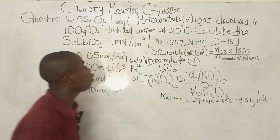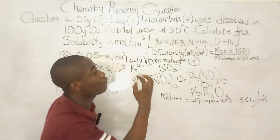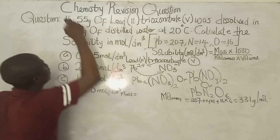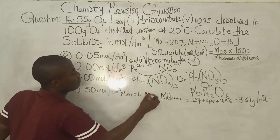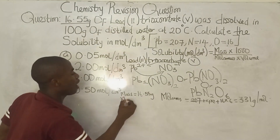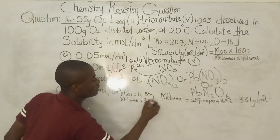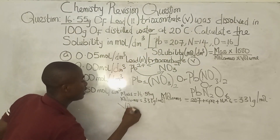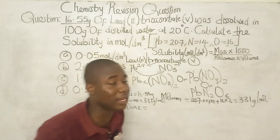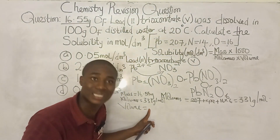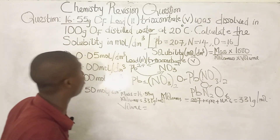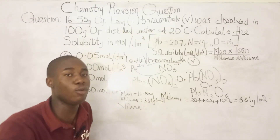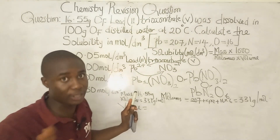Now we bring out the parameters from the question. The mass given is 16.55 grams. We have the molar mass: 331 g/mol. The remaining parameter we need is volume. The question did not give us volume directly, so we need to calculate it.